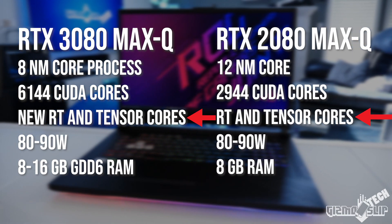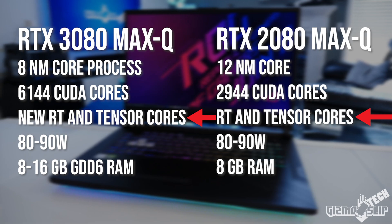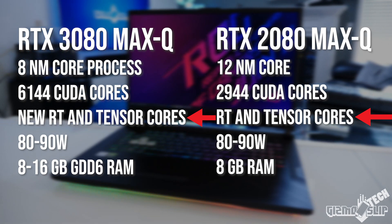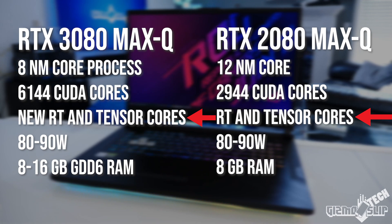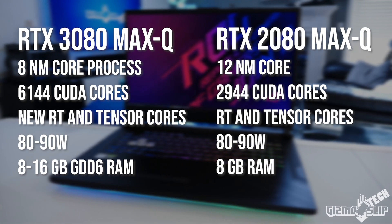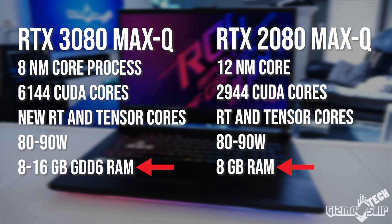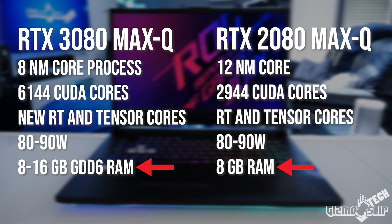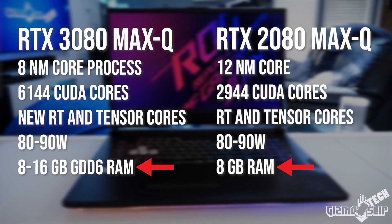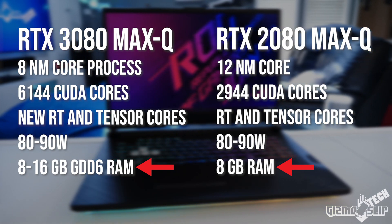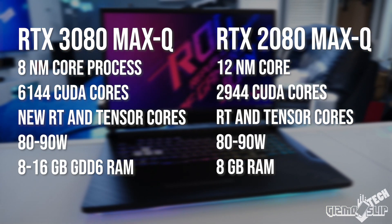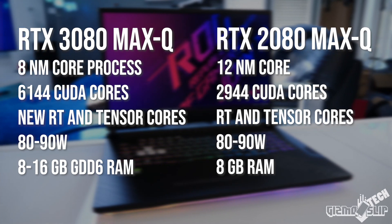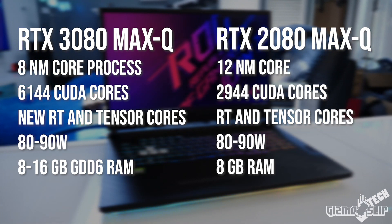The 3080 Max-Q should also have improved RT and Tensor cores, so better performance in RTX and DLSS comparatively speaking — though how much of an improvement we don't really know for sure. It's also rumored that we'll get up to 16 gigs of VRAM in some 3080 Max-Qs, but some might only have 8 gigs. Most games need less than 8, so I don't think that's a huge upgrade unless you're going to play a game that needs more VRAM.